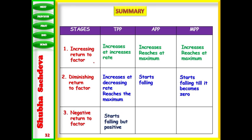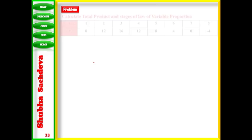In negative returns, TP starts falling but it is always positive. AP continues to fall and MP becomes negative. This is the summary showing the relationship between the stages. Further, we'll be solving some problems — calculate total product and the stages of the law of variable proportion.